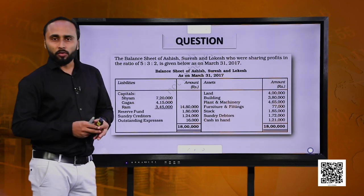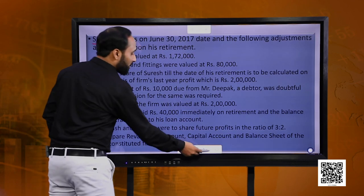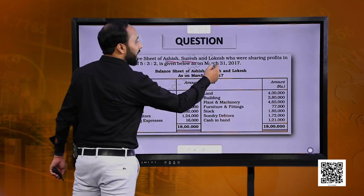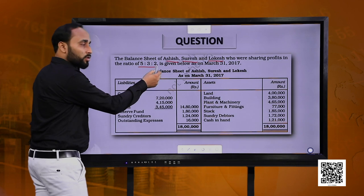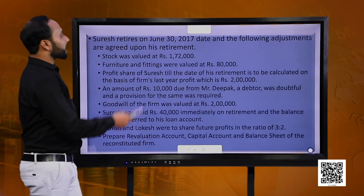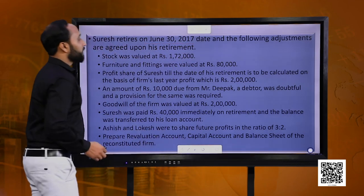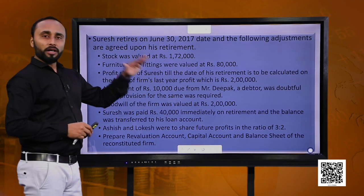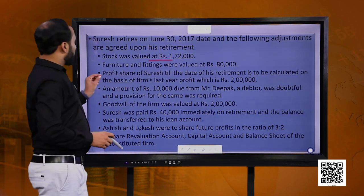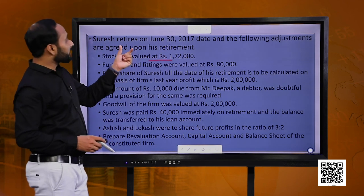Now let us look at the scenario. In this firm, Suresh is getting retired. Always try to remember which partner it was in terms of sequence of their ratio. We had Ashish, Suresh and Lokesh; the ratio was 5:3:2. Suresh is getting retired, which means his share was 3/10 in the firm. Also notice that Suresh is getting retired on 30th June.